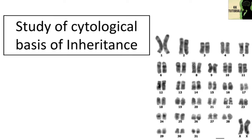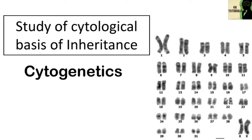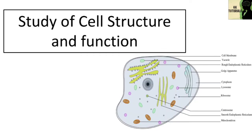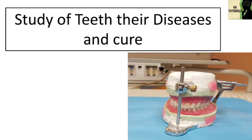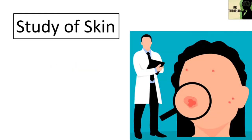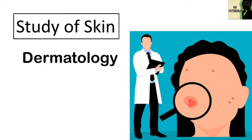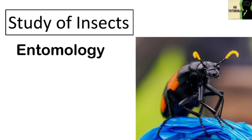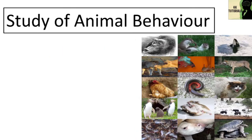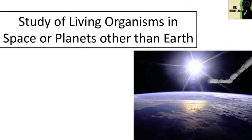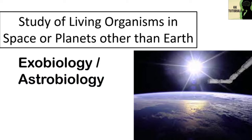The study of the cytological basis of inheritance is called cytogenetics. The study of cell structure and function is called cytology. The study of teeth, their diseases and cure is called dentistry. The study of skin is called dermatology. The study of insects is called entomology. The study of animal behavior is called ethology. The study of living organisms in space or on planets other than Earth is called exobiology or astrobiology.